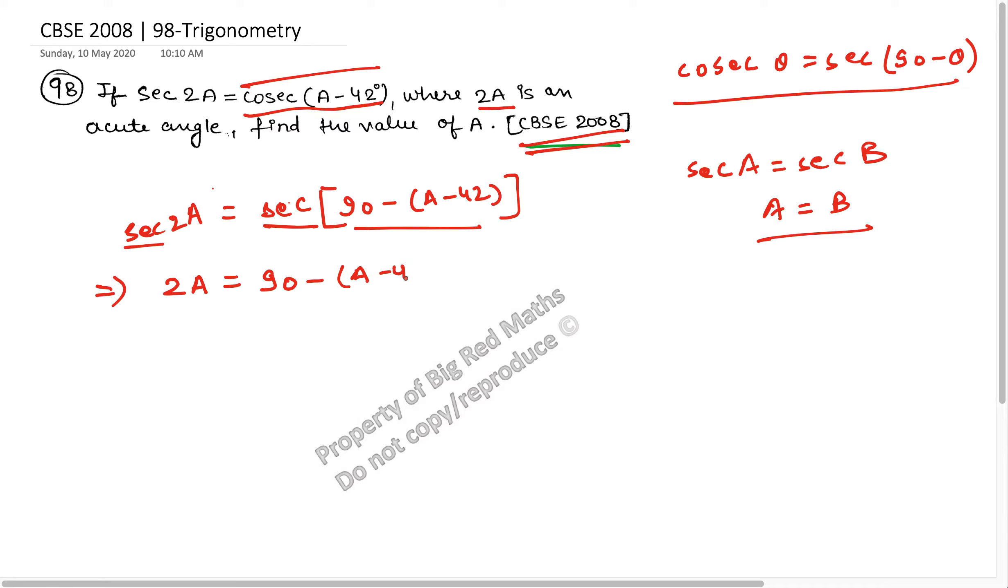Since 2A is an acute angle, this becomes 2A is equal to 90 minus A plus 42. This becomes 3A is equal to 132, and A becomes 132 by 3, which is 44 degrees.